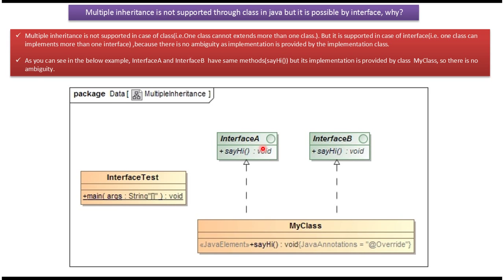Here you can see the example of multiple inheritance. Here you can see interface A and here you can see interface B. Both interface A and interface B have a sayHi method. My class implements interface A and interface B and provides implementation of the sayHi method. So the implementation of the sayHi method is provided by the implementation class, so there is no ambiguity.